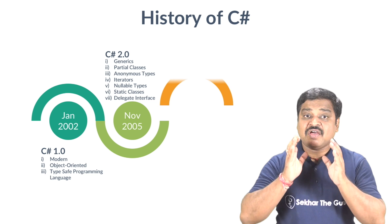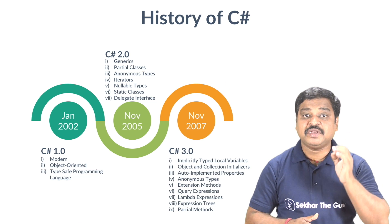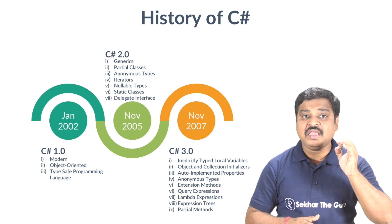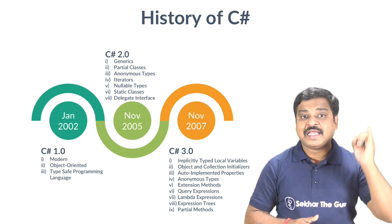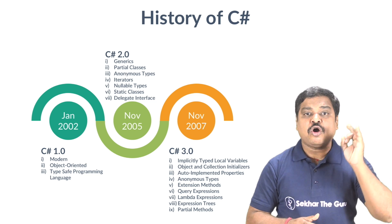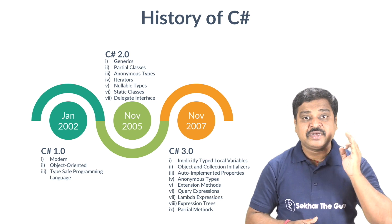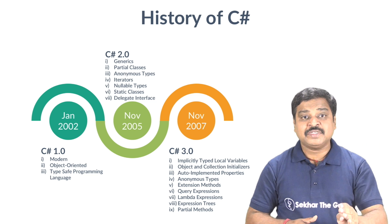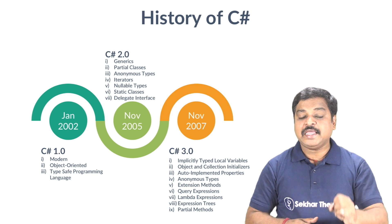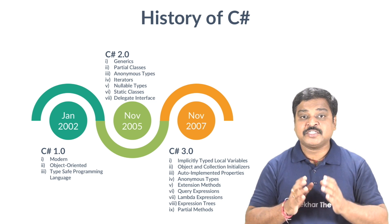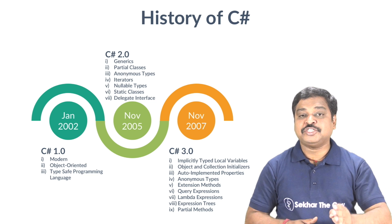In November 2007, C Sharp 3.0 was released with many features such as implicitly typed local variables, object and collection initializers, auto-implemented properties, anonymous types, extension methods, query expressions, lambda expressions, expression trees, and partial methods.